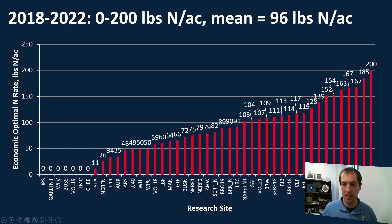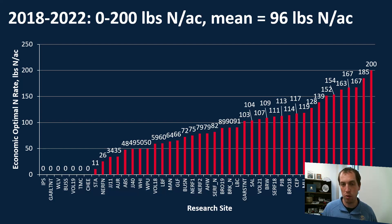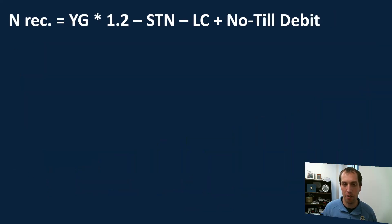So how do we best predict these nitrogen rates, since they vary so much across the state? Traditionally, to this point, we've been using what we call a yield goal approach, using a multiplier of 1.2 for the amount of nitrogen needed to produce one bushel of corn. The equation looks a little bit like this.